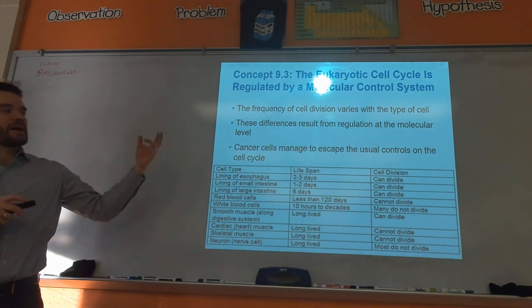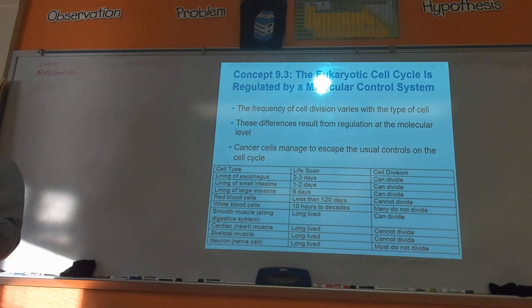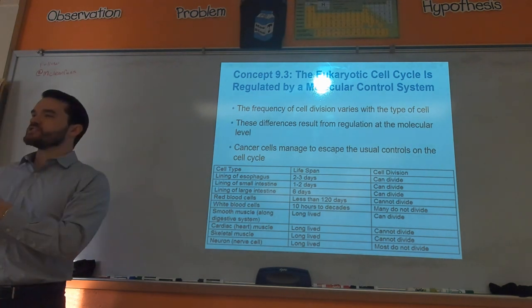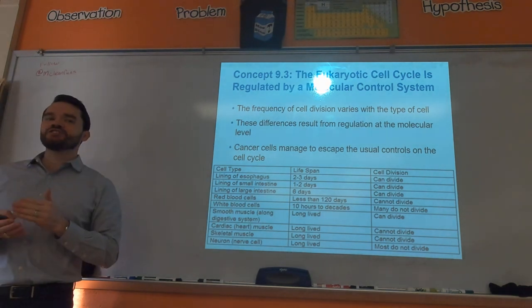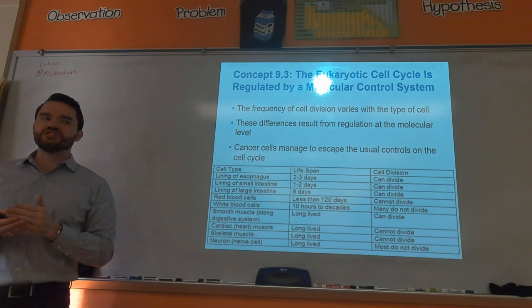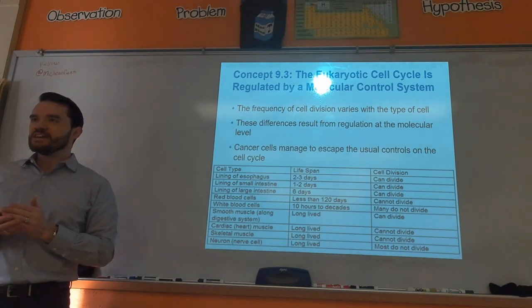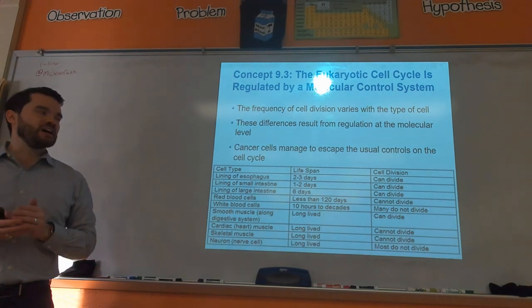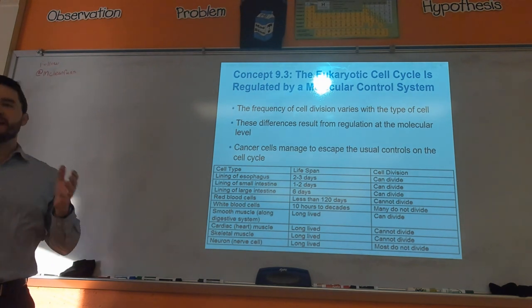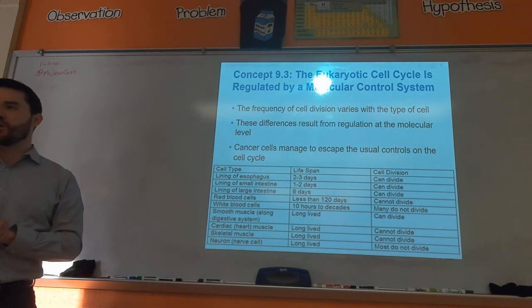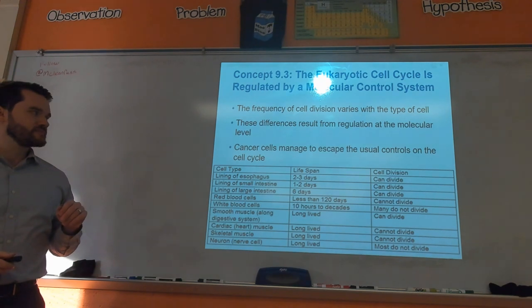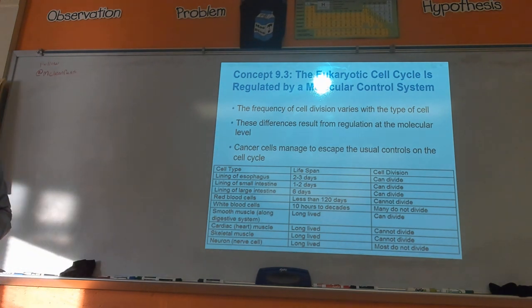In cancer, a cell loses the normal controls that govern the cell cycle. Cancer cells stop responding to those controls — they lose the social cues that manage when a cell is going to grow, not grow, divide, or not divide. These regulations happen at the molecular level.